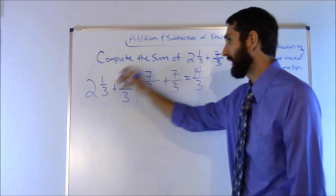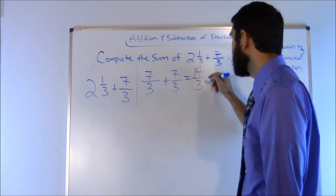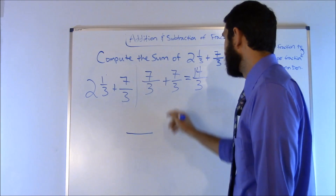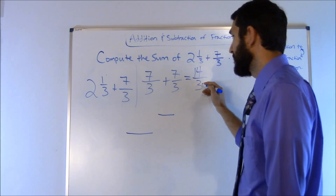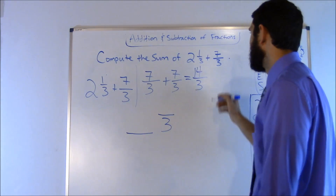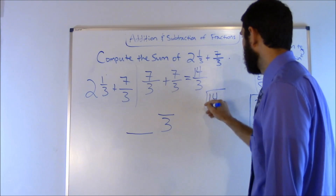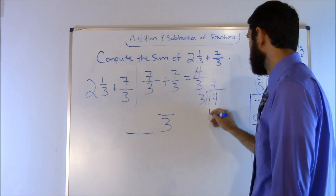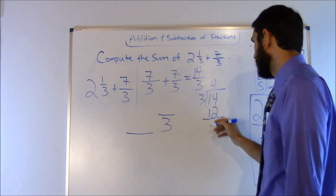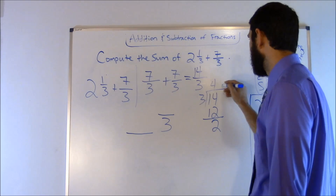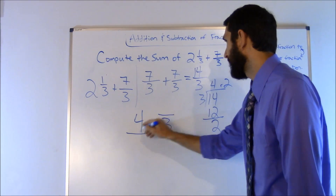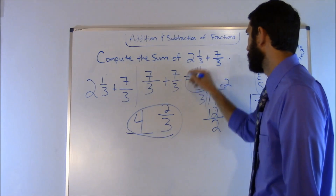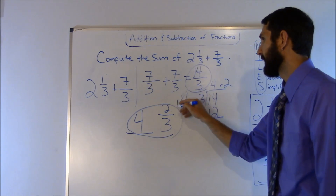S for simplify: 14 over 3 is an improper fraction, so we convert it back to a mixed number by dividing 14 by 3. Carry over the denominator 3. How many times does 3 go into 14? 4 times — 3 times 4 is 12, and 14 minus 12 gives a remainder of 2. So the answer is 4 and 2 thirds, which is equivalent to 14 over 3.